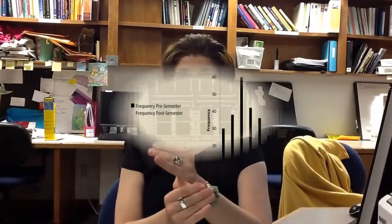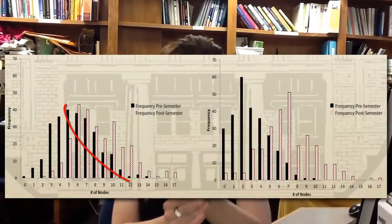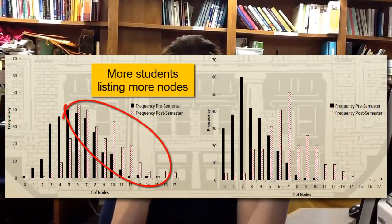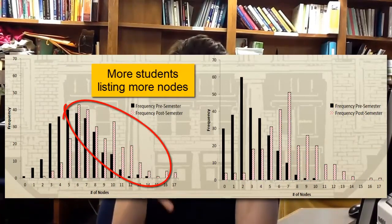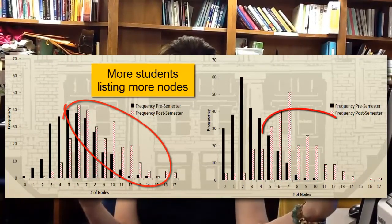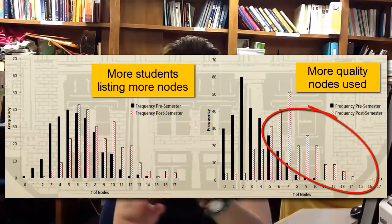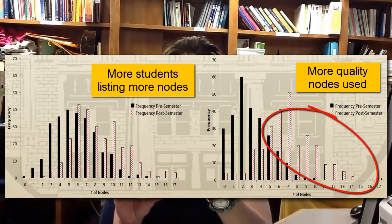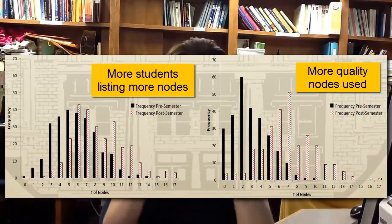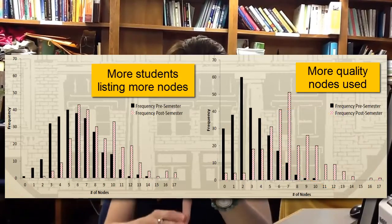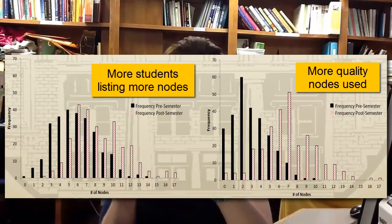Not only did the nodes increase, but the quality of the nodes increased. So we didn't have crazy anymore as a node relating to psychology. We had things like psychological disorders, and from there bipolar, depression, and schizophrenia. So we were able to instill information in our students, which was really exciting.